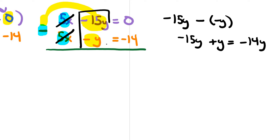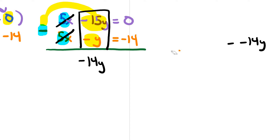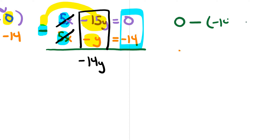If I subtract those two y variables vertically, it would be negative 15y plus y, which equals negative 14y. So if I take care of the y variables on that vertical column, I get negative 14y. Make sure you're good with that — what you're doing is really solving negative 15 minus a negative y. And then on this last column, I have 0 and negative 14. So it's really 0 minus negative 14, which is going to be positive 14.